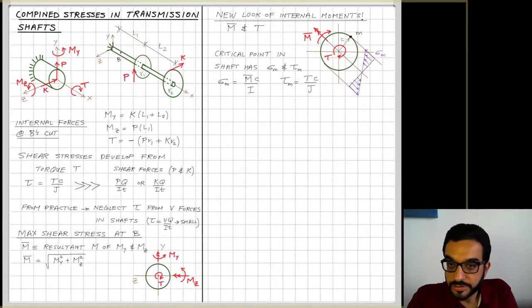So τm is equal to Tc over J. So now I have what I want initially: the stresses that are developed based on the internal forces I have. σm and I have τm.